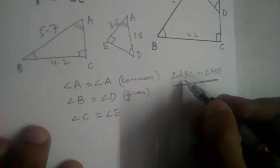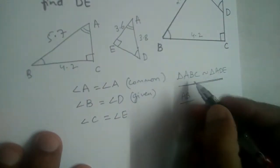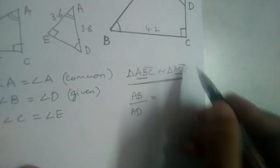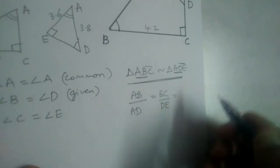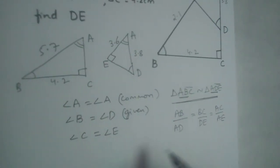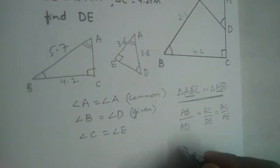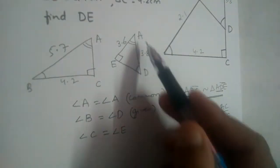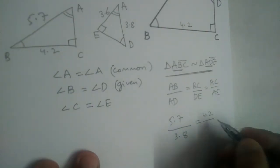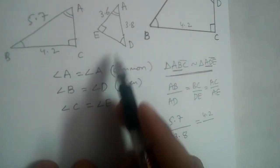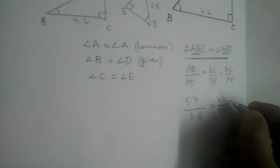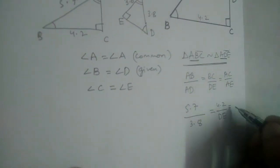Alright, now we have all the values. Let us divide the corresponding sides. AB corresponds to AD, so AB divided by AD should equal BC divided by DE, and that ratio should equal AC divided by AE. Let us substitute the values: AB is 5.7 divided by AD which is 3.8, equals BC which is 4.2 divided by DE. We need to find DE, so AC and AE are not needed here.